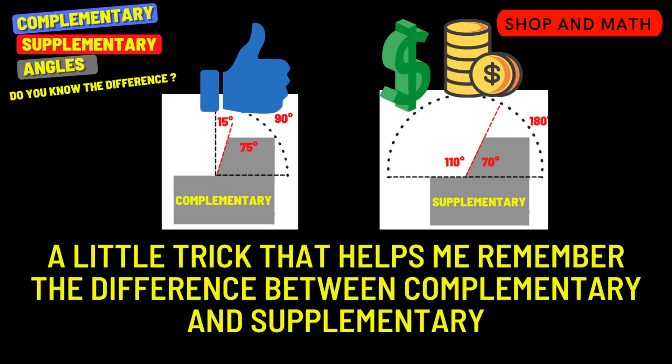A little trick I use to help remember the difference: looking at the complementary angle on the left, that's the thumbs up — I look at it as someone giving me a compliment, which is nice and appreciated. For the supplementary angle, supplementary is like supplementary income — it's like someone giving me cash, which is bigger than a compliment. So a compliment is 90 degrees and a supplement is 180 degrees. That's what I use to help remember because I have a hard time telling them apart.